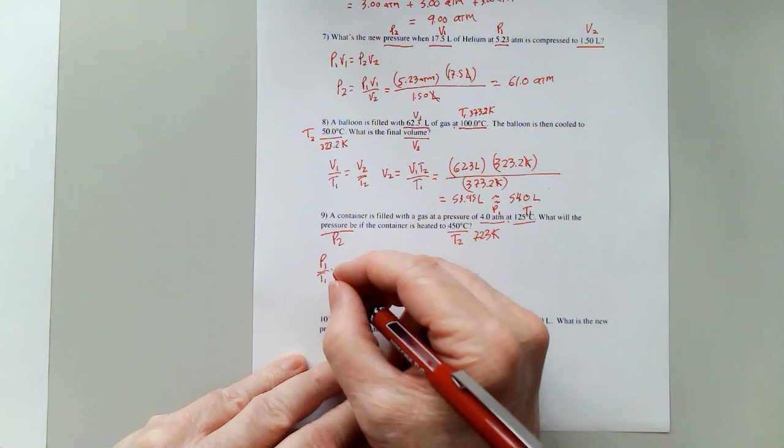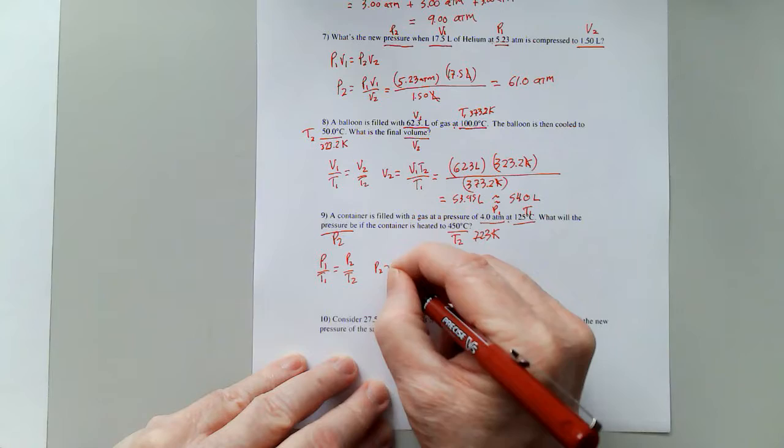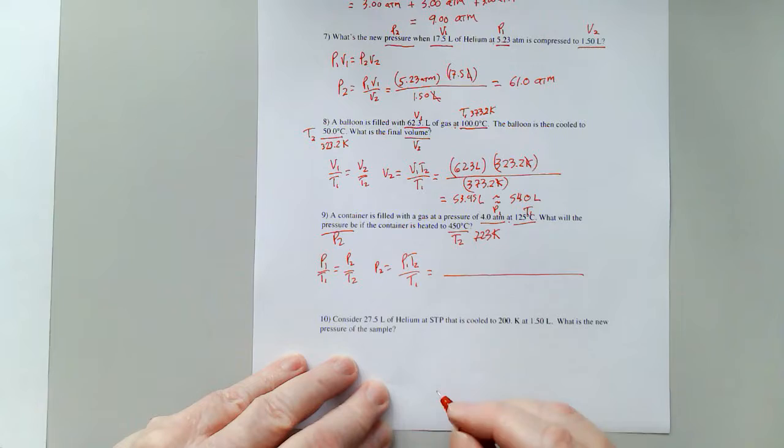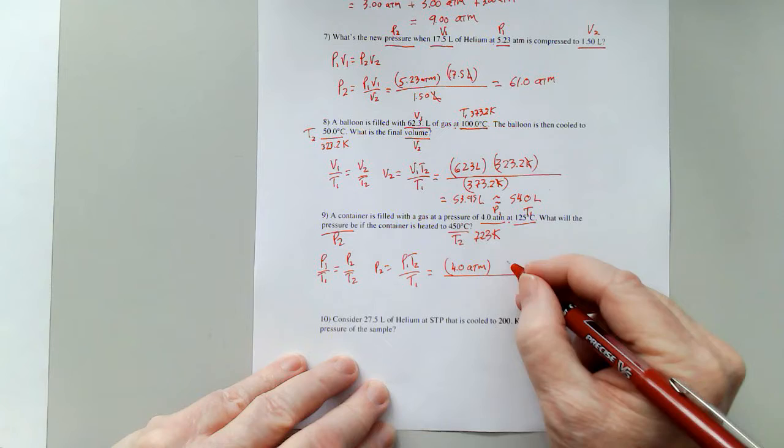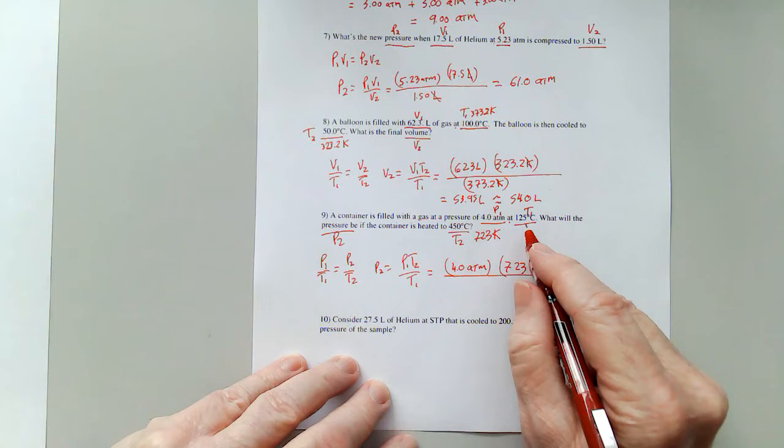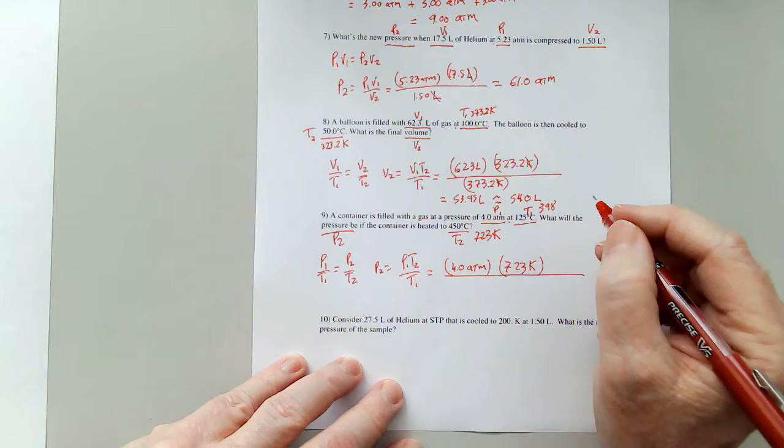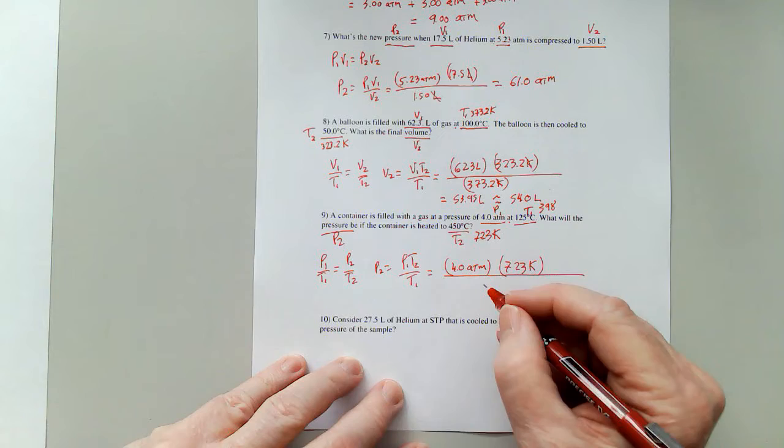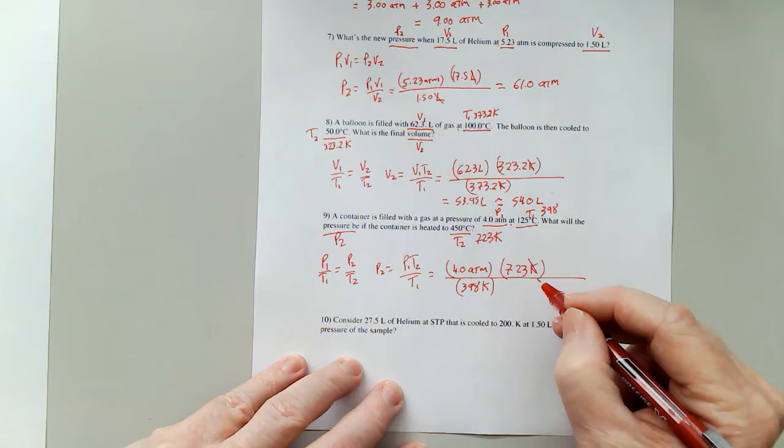P1 over T1 because all I've got is pressures and temperatures equals P2 over T2. P2 is equal to P1 T2 over T1. I have 4.0 atmospheres, I've got 723 Kelvin, 125 plus 273 is 398. I could do the 0.2, but no need, I mean 2 sig figs can make a difference here. 398 Kelvin. Kelvin cancels Kelvin.